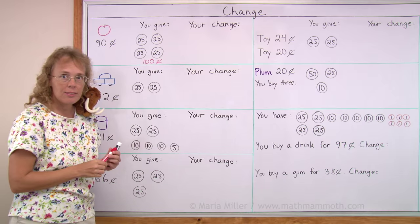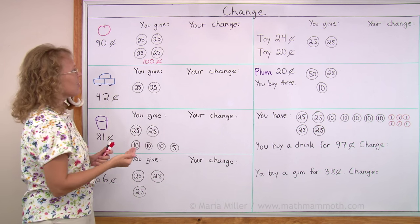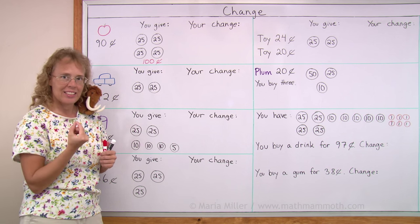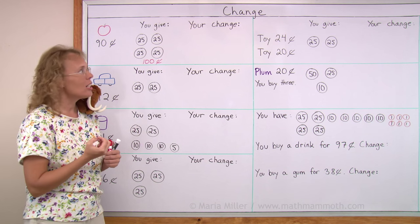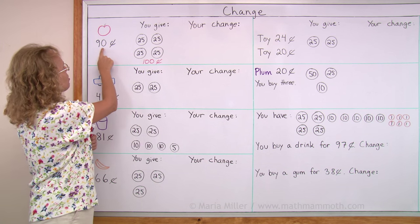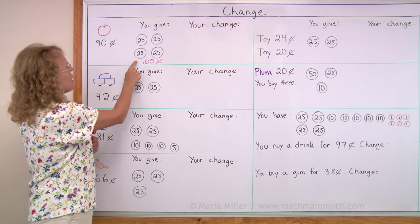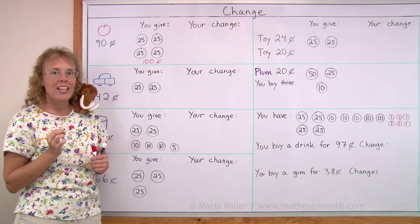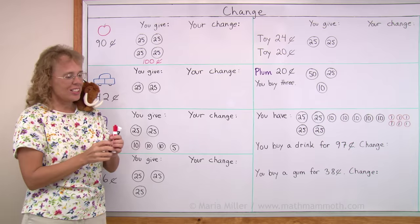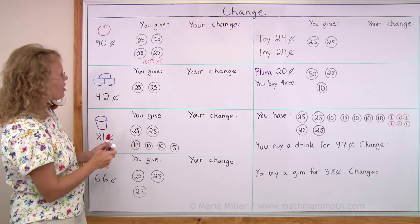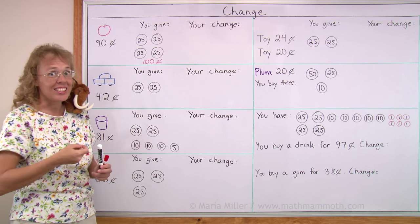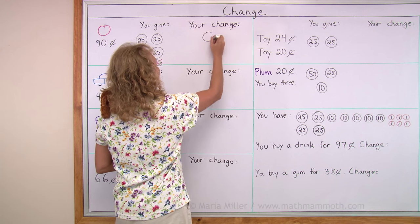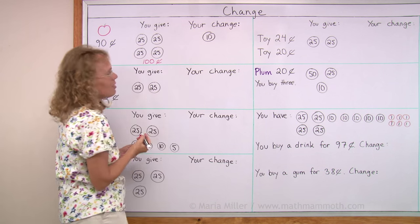You're paying too much, right? And then the clerk will give you back 10 cents — that's your change. That is the difference between 90 cents and 100 cents. It is the amount that you overpay. You pay 10 cents too much, so the clerk gives you 10 cents back. That's your change. I'll draw it here as a 10 cent coin, a dime.